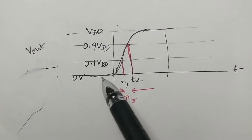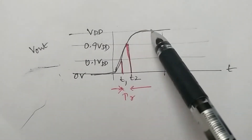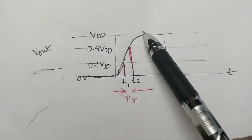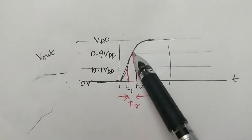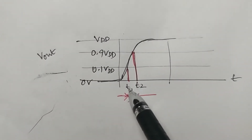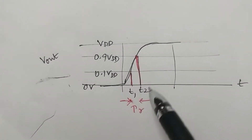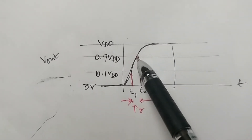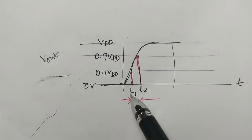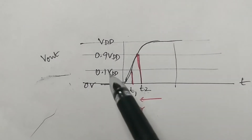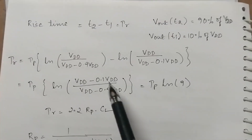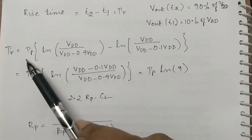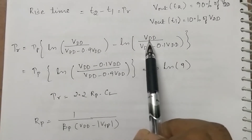From the waveform, the output voltage does not rise abruptly from 0V to 5V but undergoes a slow transition. The time taken for the output to change from 10% to 90% of the maximum output voltage is the rise time. Rise time = T2 − T1.